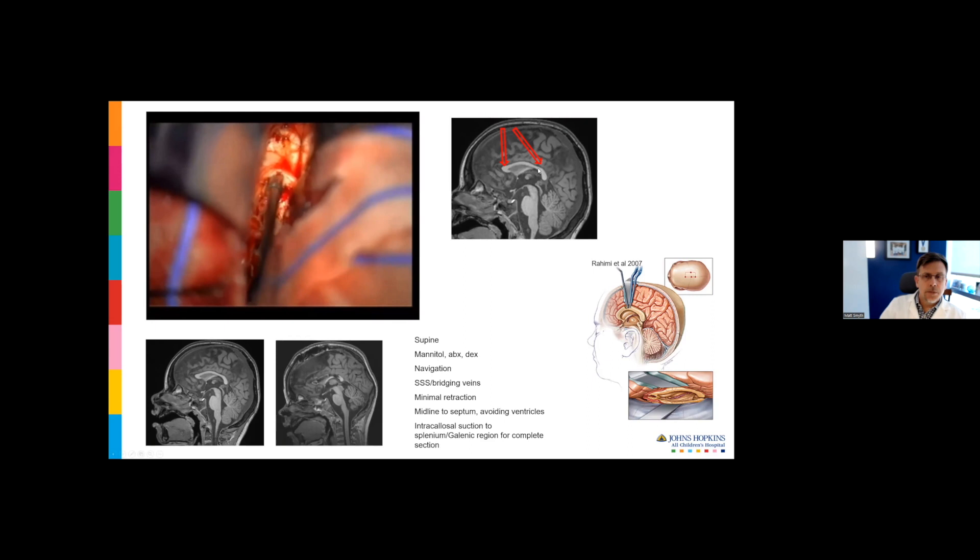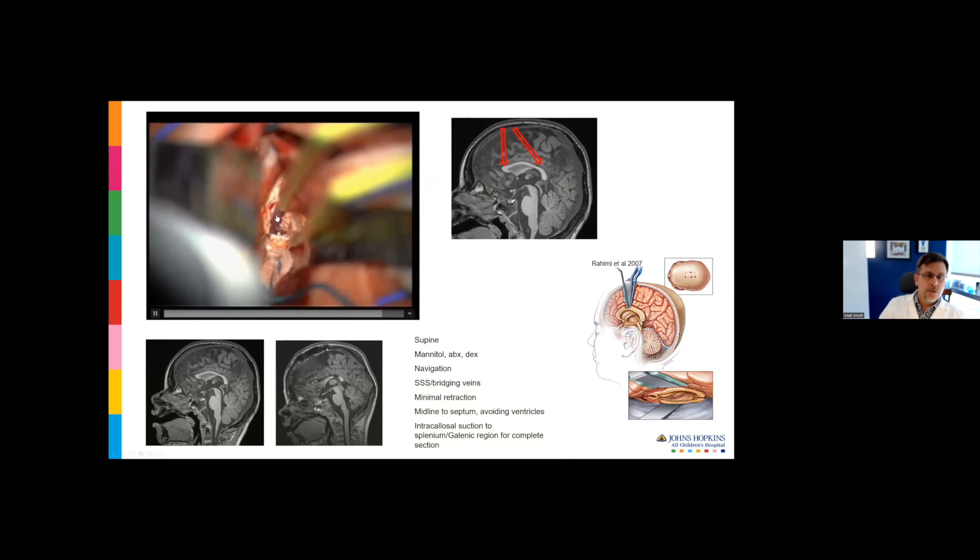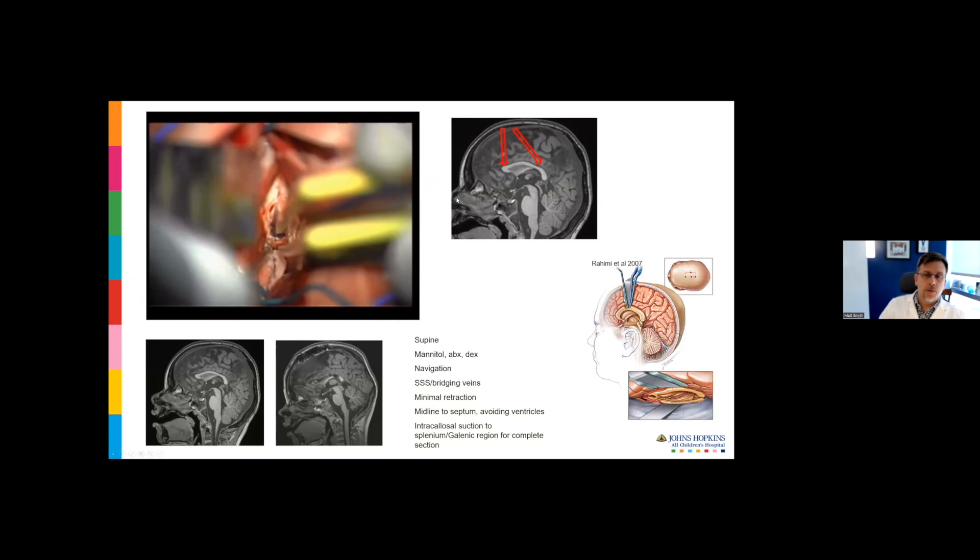I start by cutting the mid-body, and then I orient my scope anteriorly. I'm focusing on the dorsum of the genu right here. I dissect over to the arch of the A2, A3 junction, and then divide those white matter tracts with the bipolar. Here we're coming down to the rostrum, looking down towards the proximal anterior cerebral arteries. Once that front part is disconnected, I drop the head of the bed and orient the scope posteriorly.